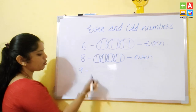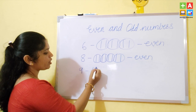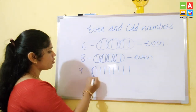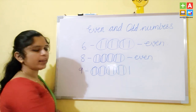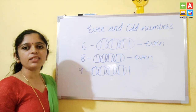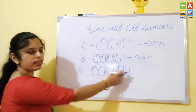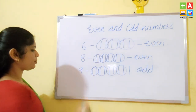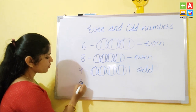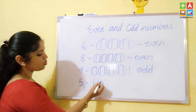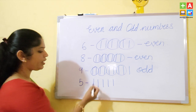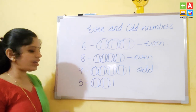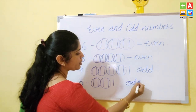Now I will take the number 9. For number 9, we draw 9 lines: 1, 2, 3, 4, 5, 6, 7, 8, and 9. Making the pairs: 1, 2, 3 — 4 pairs are there, but one line is remaining. Whenever something is left over, that number is odd. So number 9 is odd. Taking another example, number 5: draw 5 lines — 1, 2, 3, 4, and 5. Making pairs: 1 and 2 — one line is remaining. Whenever something is left over, that number is odd.